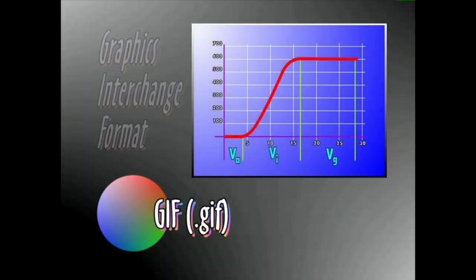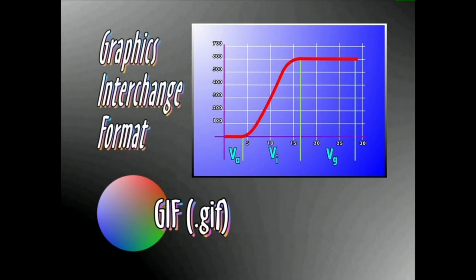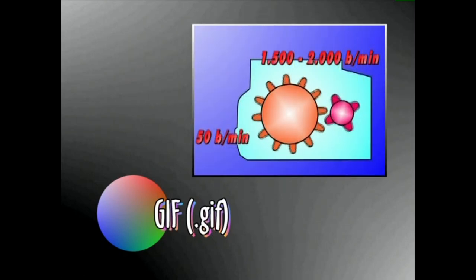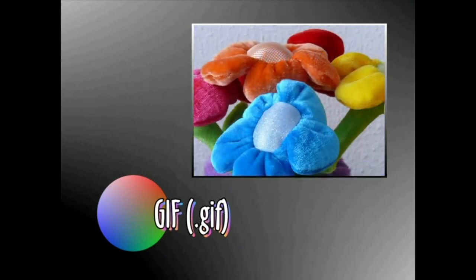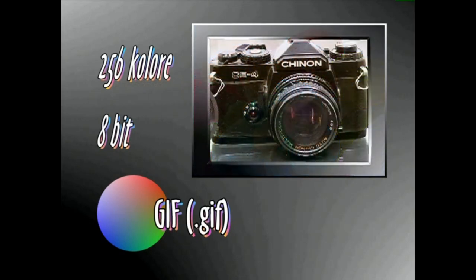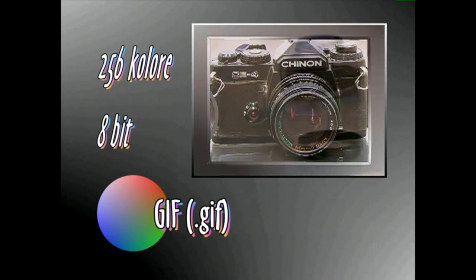GIF, Graphics Interchange Format esamoldearen laburdura da. Grafikoak elkartrukatzeko formatua esan nahi du. GIF formatua internet sarean erabiltzeko aproposada, gardenkiak eta animazioak onartzen dituelako. Baina gehienez berreundaberrogeta amasei kolore eta zortzi bit dauzkaten irudiak baino ez ditu onartzen biltegian. GIF formatuan gordetako fitxategiak .GIF luzapen arekin adierazten dira.